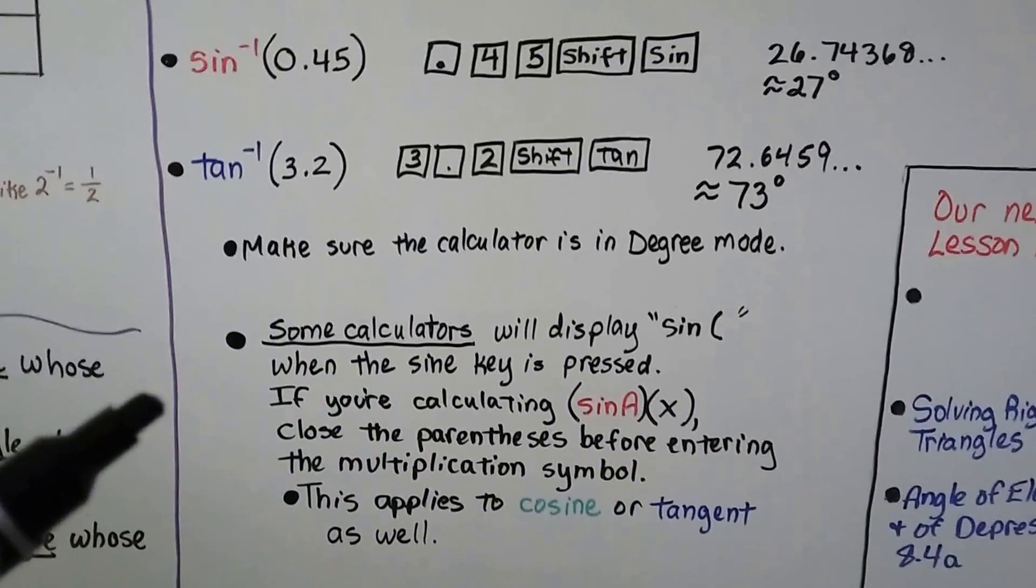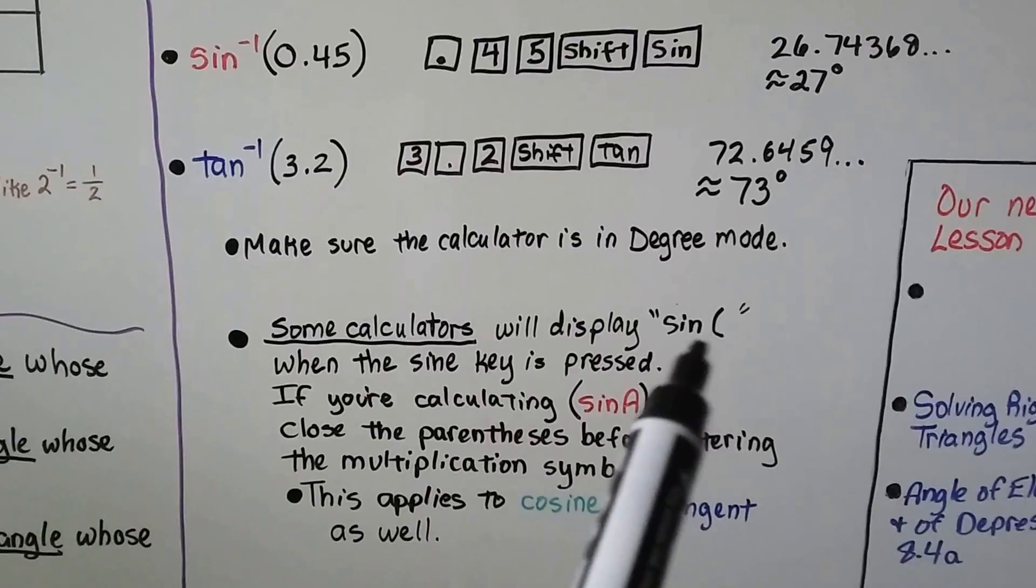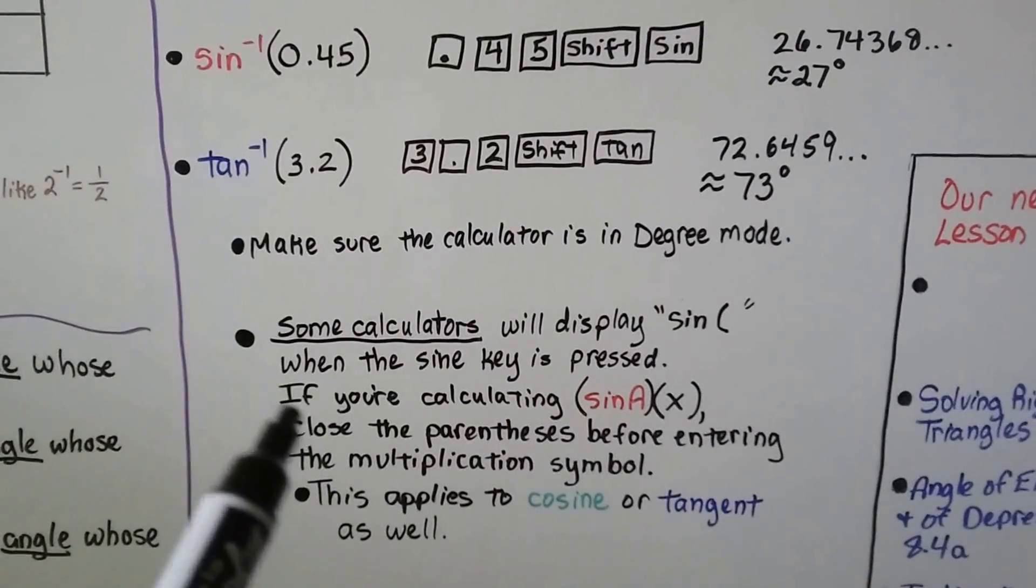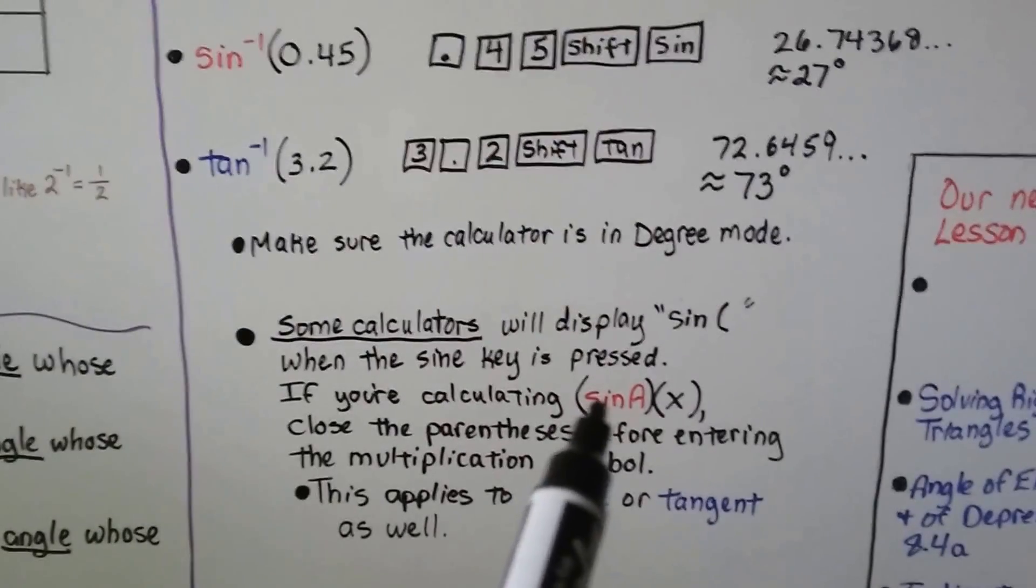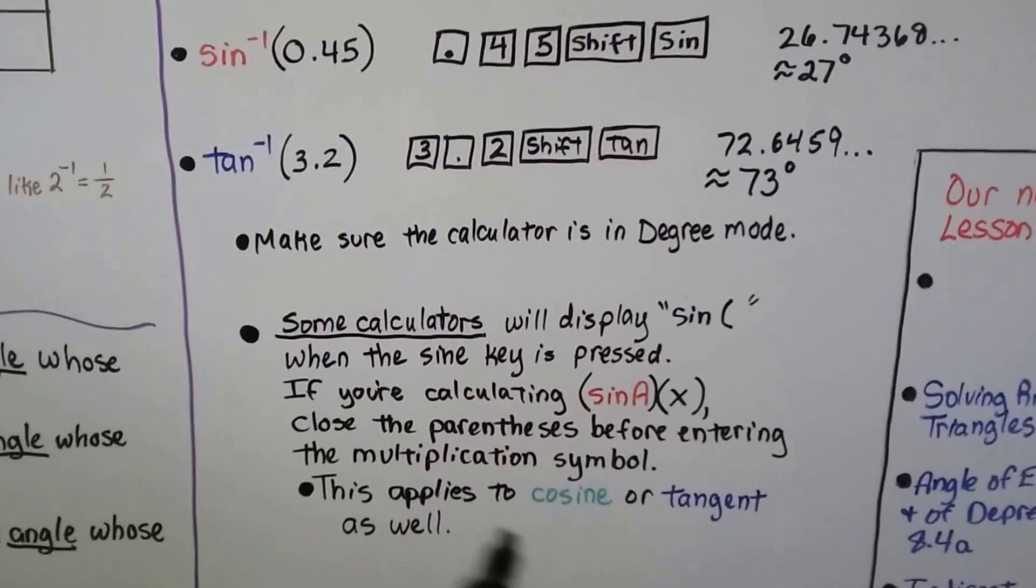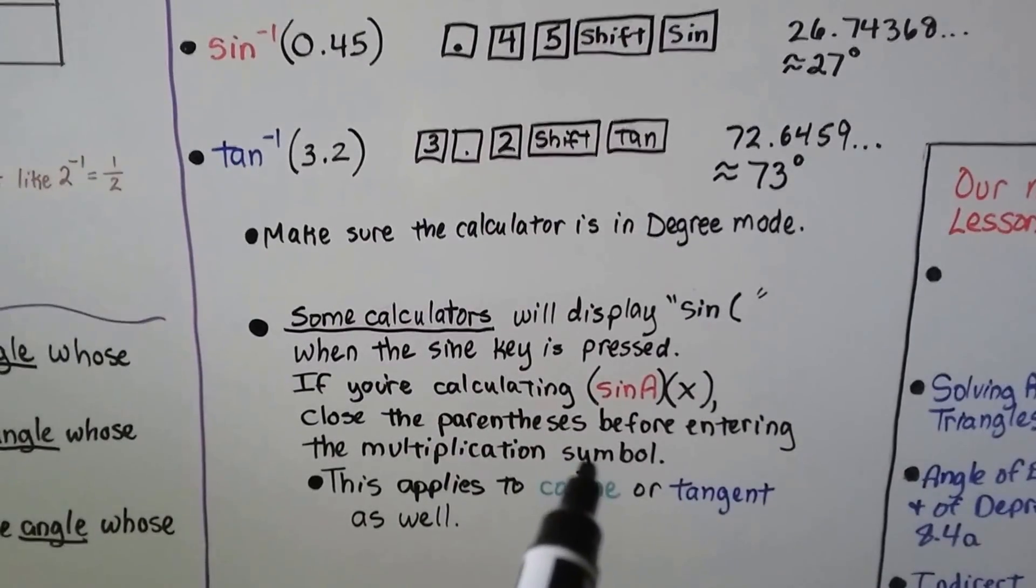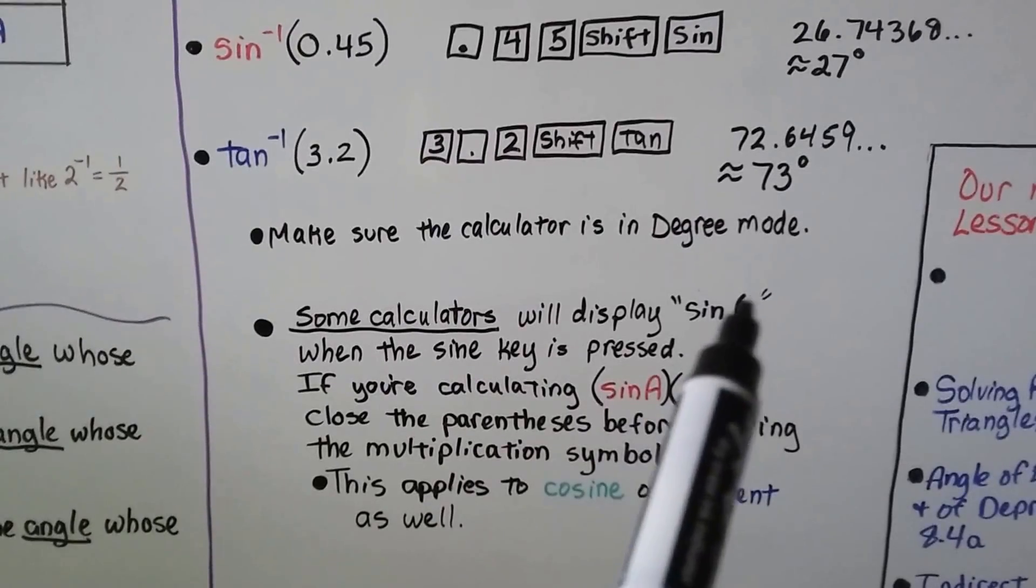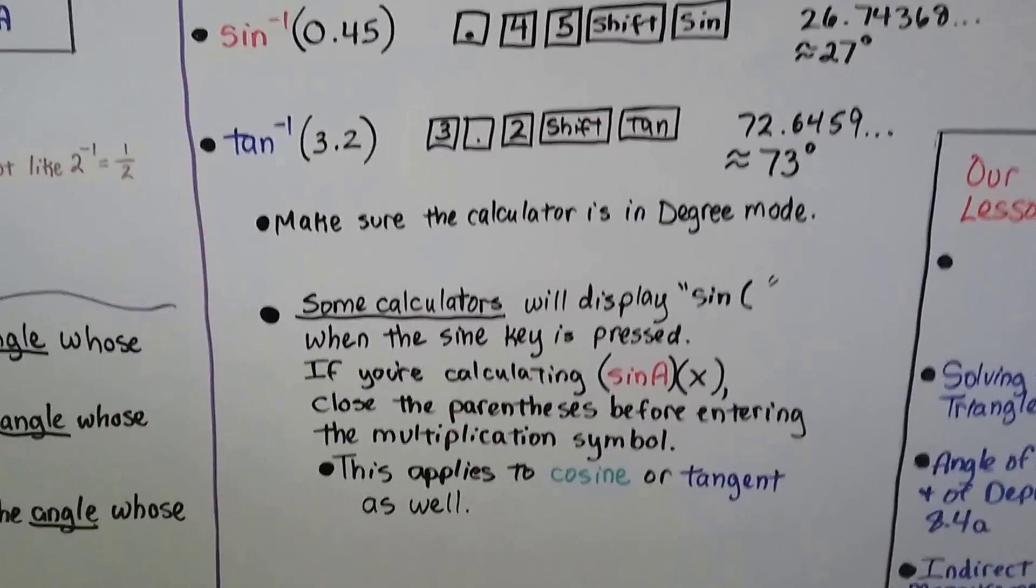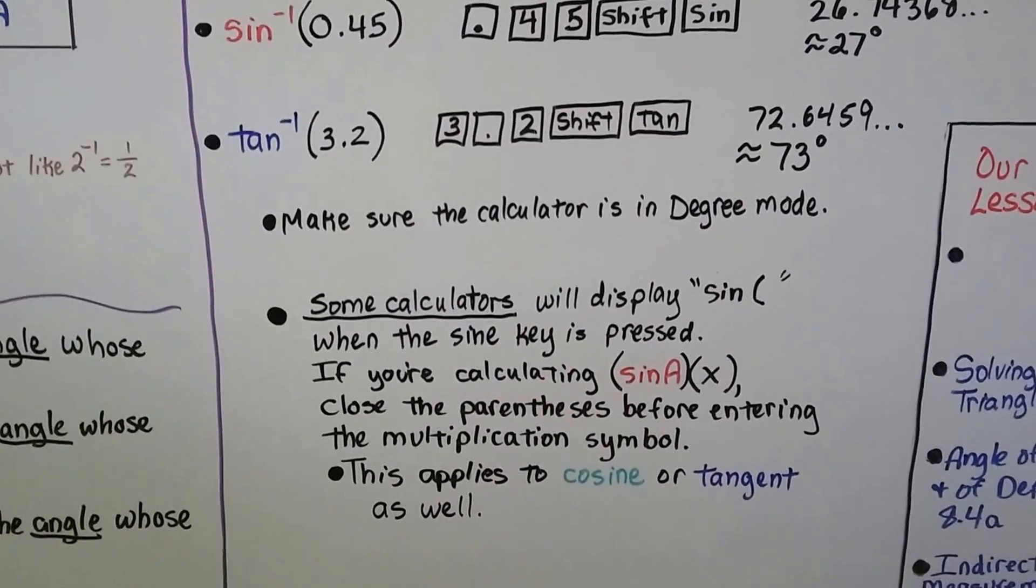Some calculators will display the sine and then a parenthesis when the sine key is pressed. So if you're calculating the sine of a times the value of x, close the parenthesis before entering the multiplication symbol. You want to put the closed parenthesis. This applies to cosine or tangent as well. It just depends on your calculator.